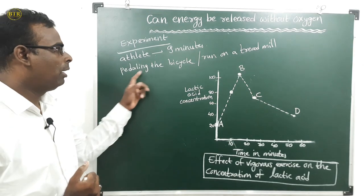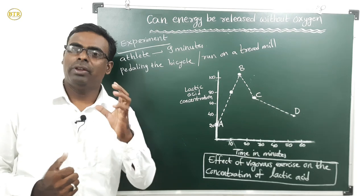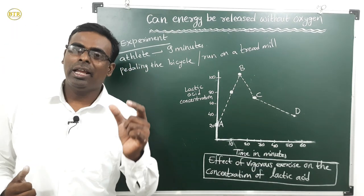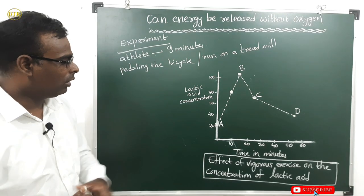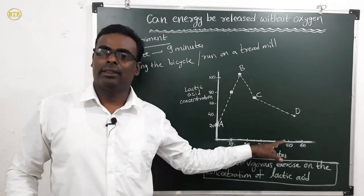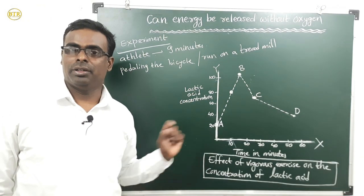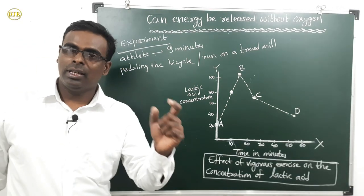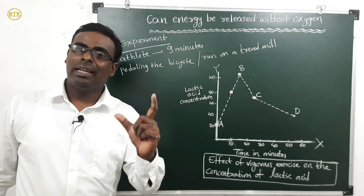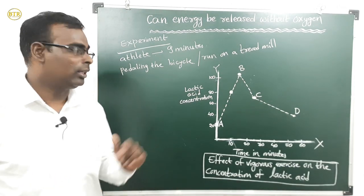The athlete has to continuously pedal the bicycle or run on the treadmill for nine minutes. During that time we are taking blood from the athlete at regular intervals. On the x-axis we are taking the time, and on the y-axis we are taking the lactic acid concentration. Whenever a person is doing exercise, lactic acid is produced in the muscles.